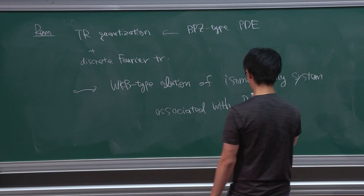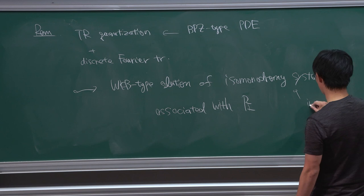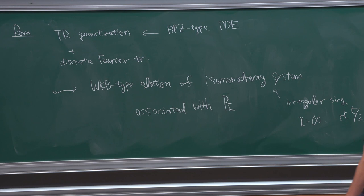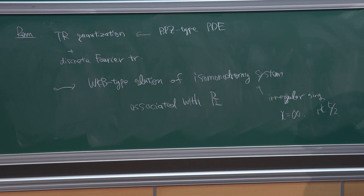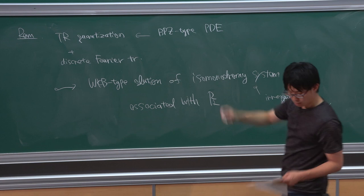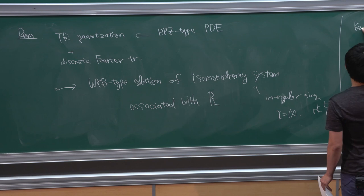As Philip explained yesterday, every Painlevé equation is related to isomonodromy deformation. In this case, the isomonodromy system corresponding to the Painlevé equation has an irregular singularity at x = infinity with Poincaré rank 5/2. This means it has five Stokes directions and five Stokes multipliers. They satisfy a cyclic relation, and two of them are independent, related to the initial data for the second-order Painlevé equation.